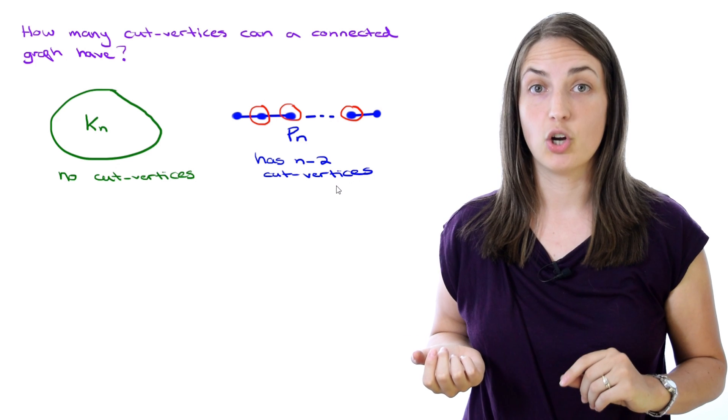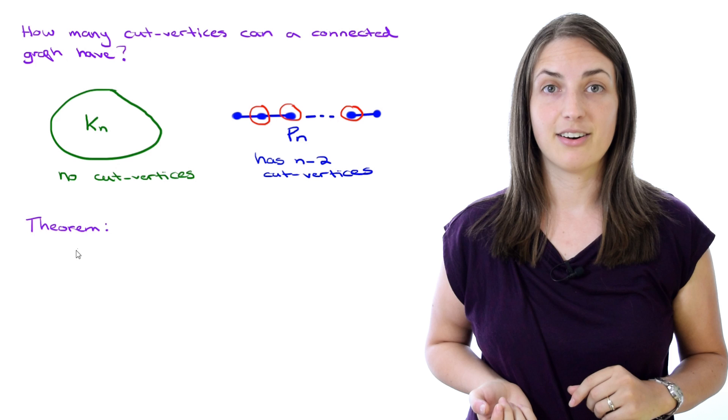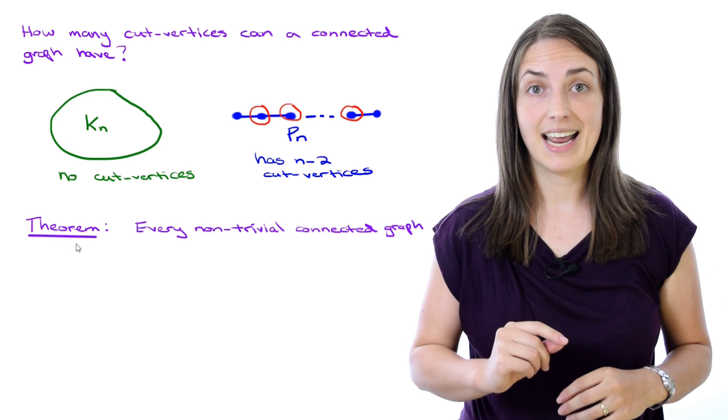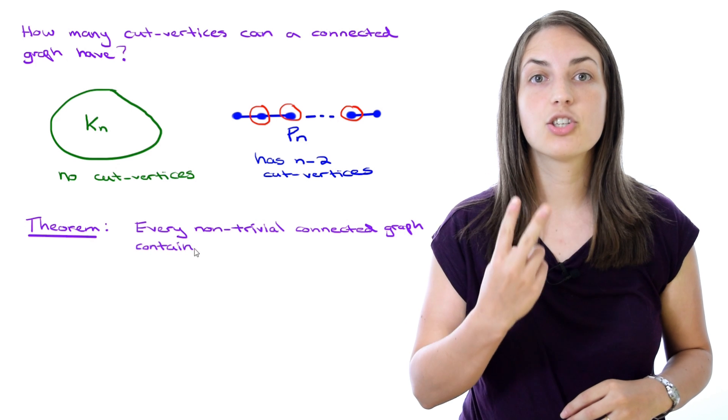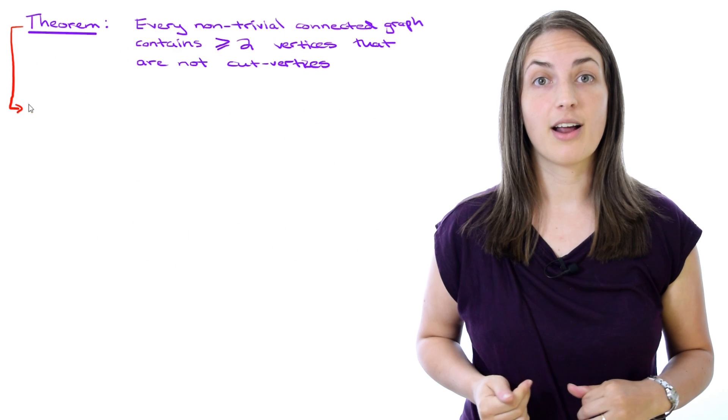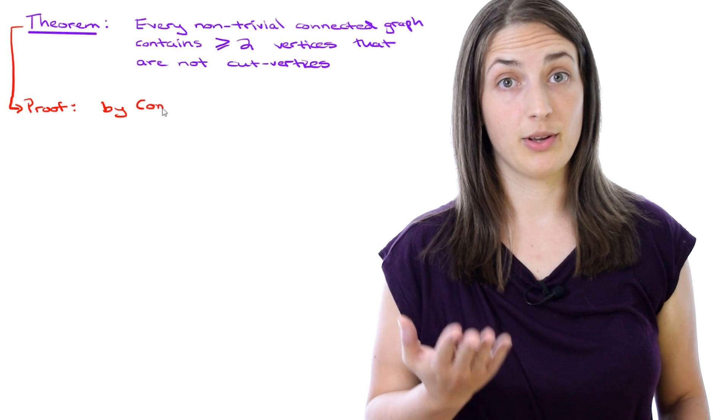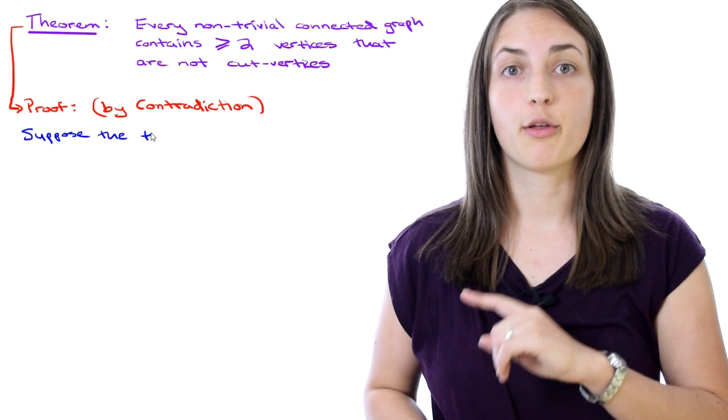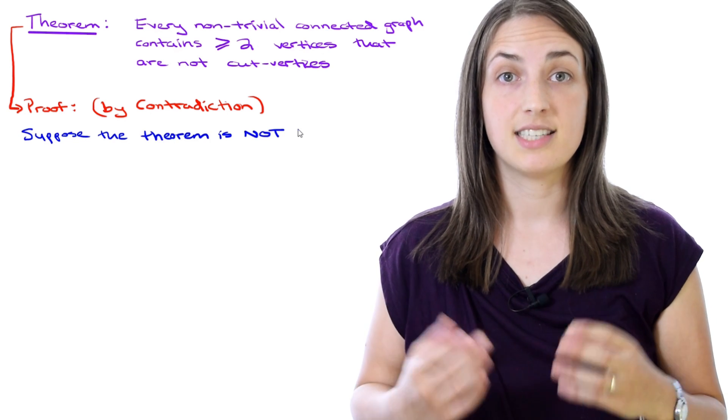The answer to that question is no, and we'll see that with this theorem which says every non-trivial connected graph has at least two vertices that are not cut vertices. Let's think about how to prove this. We'll do so by contradiction. That means we will suppose that our theorem is not true and see what happens.